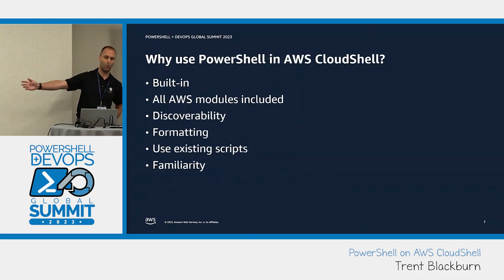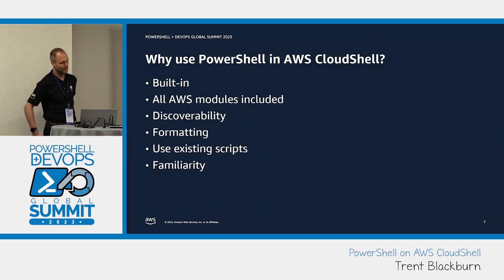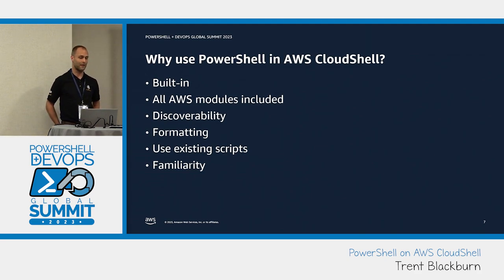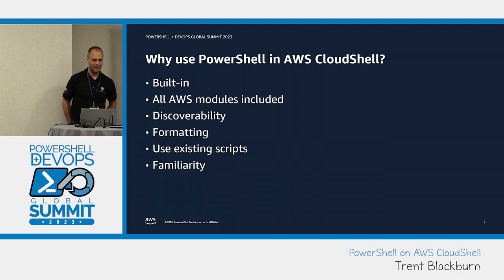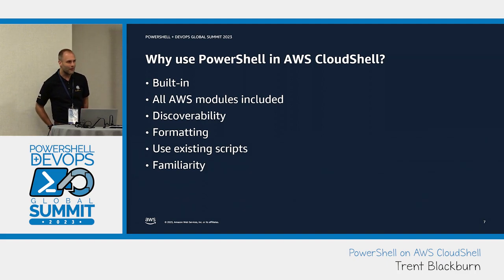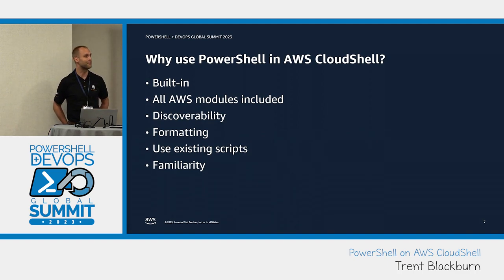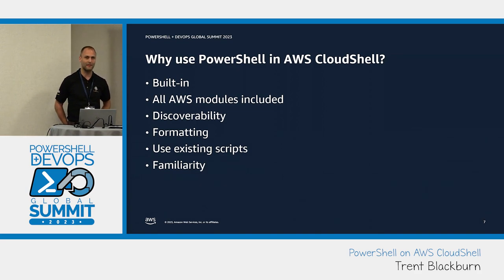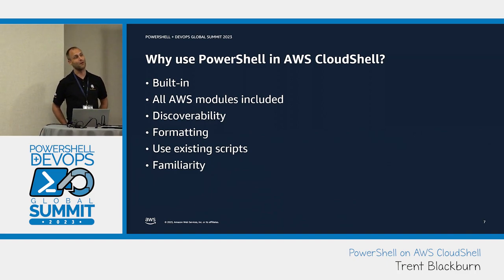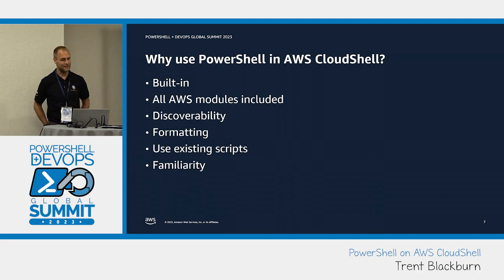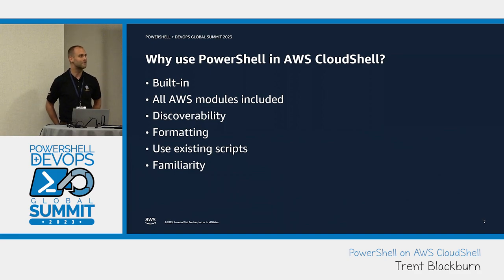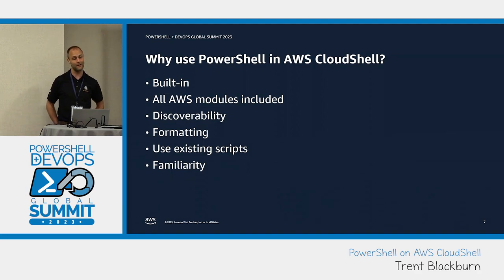Why should you use PowerShell in AWS CloudShell? We've covered why CloudShell is awesome — so why use PowerShell? PowerShell is built into AWS CloudShell; you don't have to install it, update it, or download any source code packages. That wasn't always the case when CloudShell first launched — it's been added in the last few years, which is awesome. It's a huge improvement to be able to choose whether you want to use a standard terminal like Bash or PowerShell, or anything else for that matter.